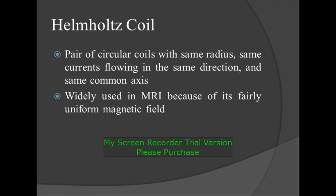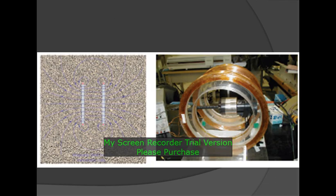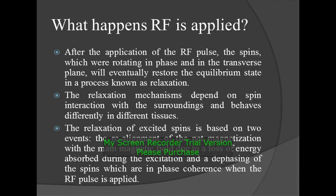Helmholtz coil: a pair of circular coils with the same radius, same current flowing in the same direction, and the same common axis. Widely used in MRI because of its fairly uniform magnetic field.